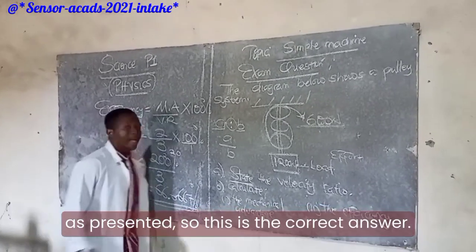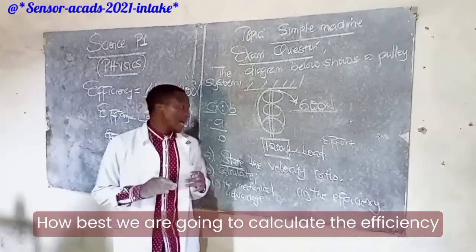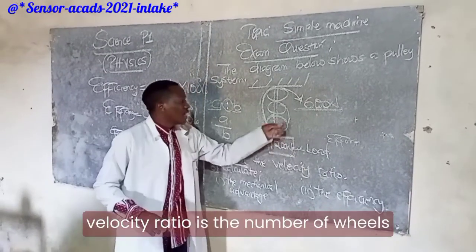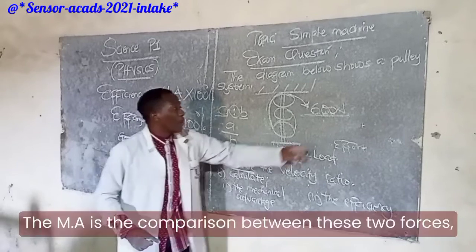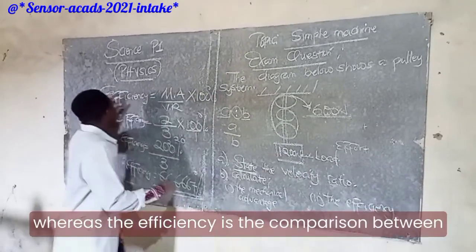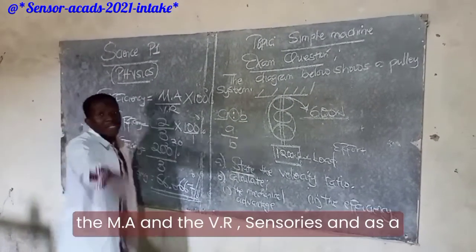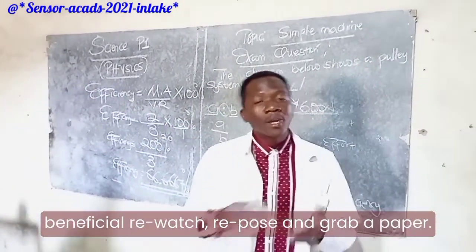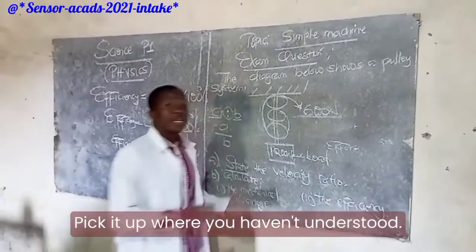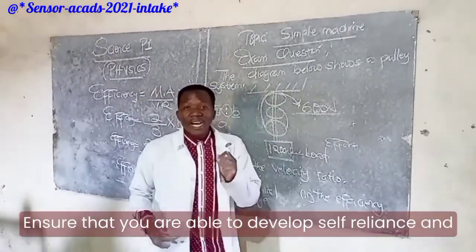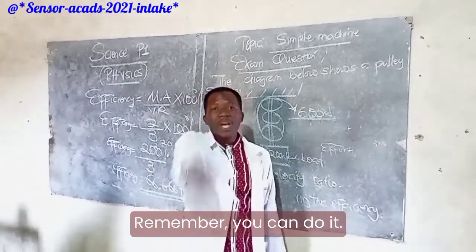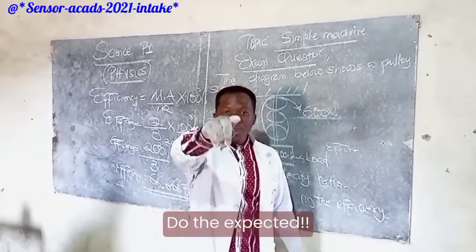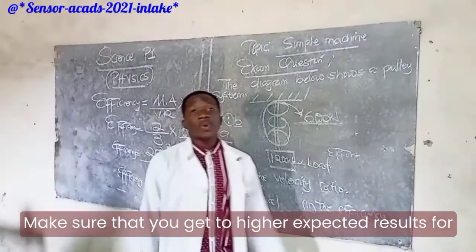This is the correct answer for calculating efficiency. To summarize: the velocity ratio is the number of wheels; the mechanical advantage is the comparison between the load and the effort; and the efficiency is the comparison between the mechanical advantage and the velocity ratio. I hope you find this beneficial. Re-watch, pause, and grab a paper. Ensure you develop self-reliance and are courageous enough to emerge victoriously. You can do it — in the days and weeks remaining before the final exam, do the expected and contribute to high results.